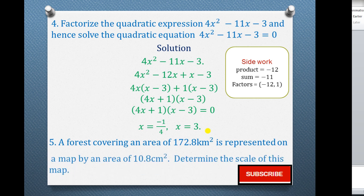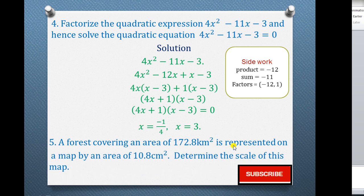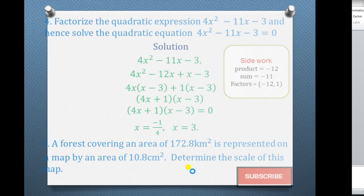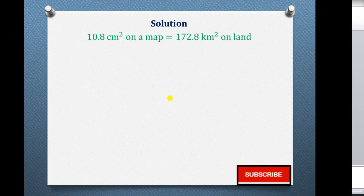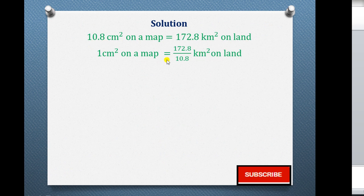Question 5: A forest covering an area of 172.8 kilometers squared is represented on a map by an area of 10.8 centimeters squared. Determine the scale of this map. We start by saying 10.8 cm² on a map equals 172.8 km² on land. So 1 cm² on a map represents 172.8 divided by 10.8 kilometers squared on land.